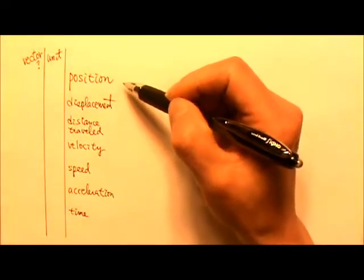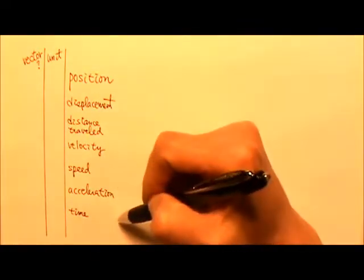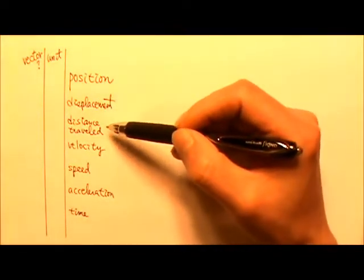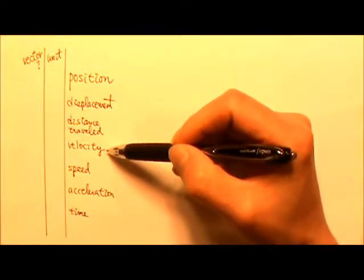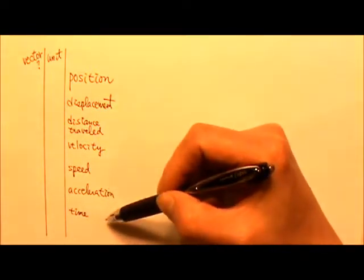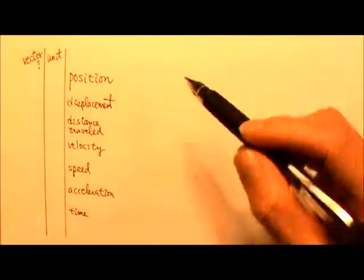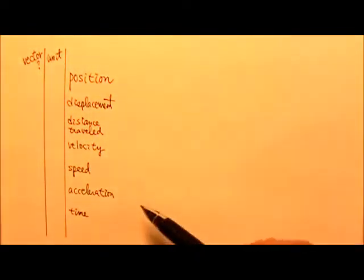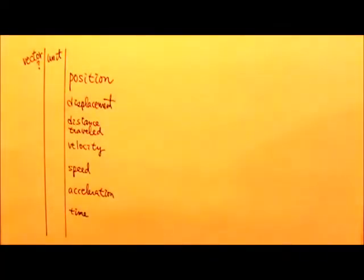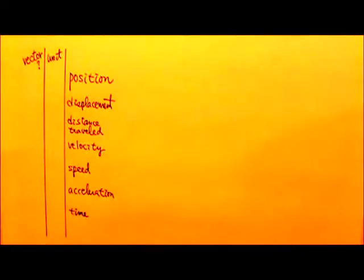In kinematics, we use these terms to describe motion: position, displacement, distance traveled, velocity, speed, acceleration, and time. If you are taking notes, you would want to save this space for later because we are going to fill it up. I will be using other pieces of paper for explanations and examples.